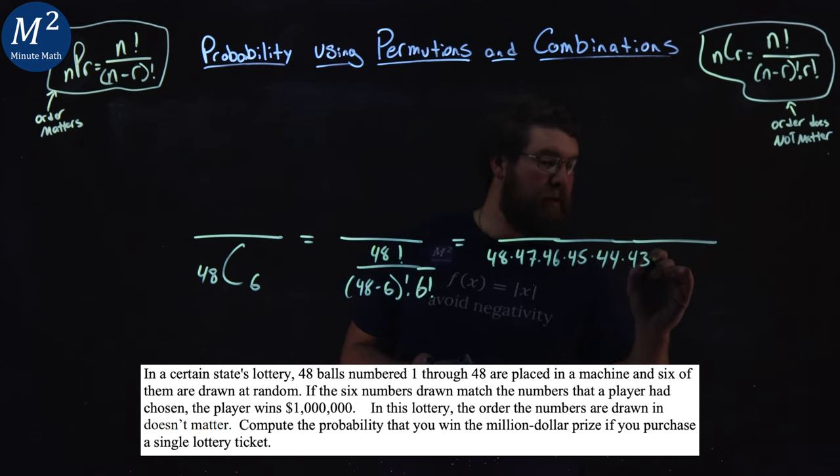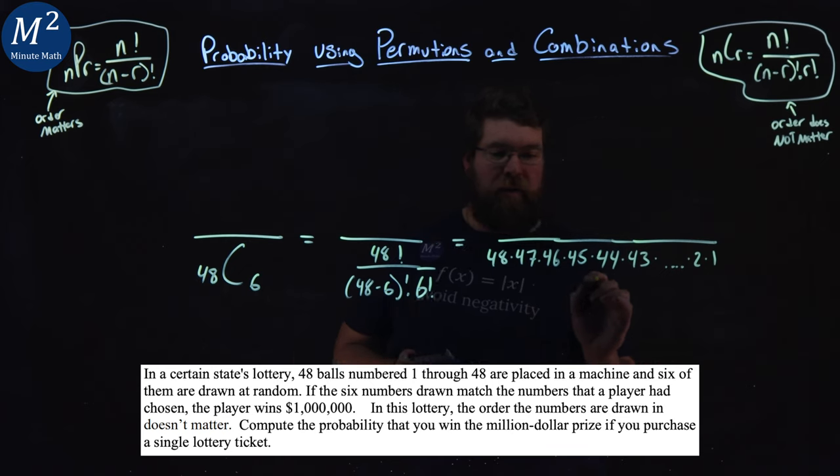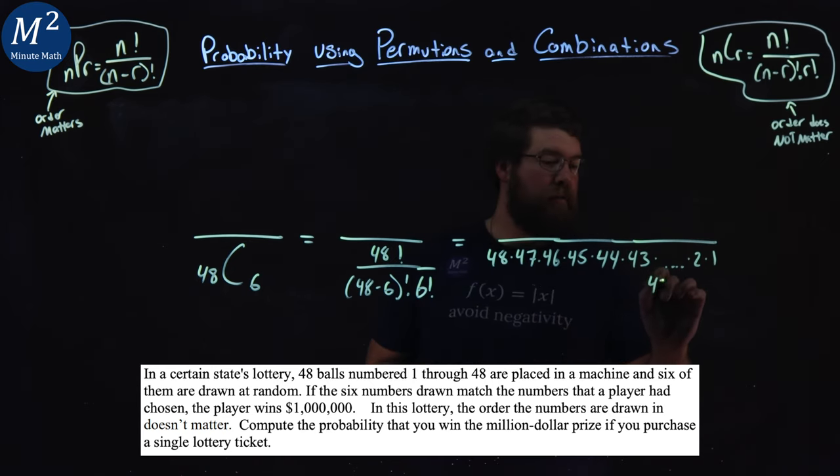I can show it to you here. For this last time here, 2, 1. And the same thing here. We have 48 minus 6 is 42. 42 times 41 times 2, 1. They cancel. Hopefully you see that, the numerator and denominator here, that fraction.